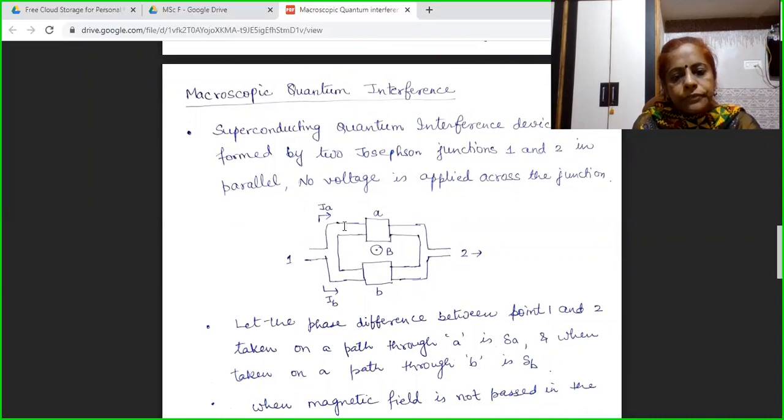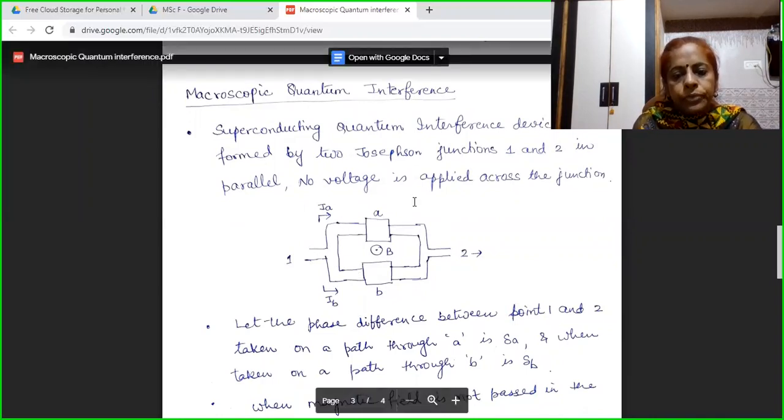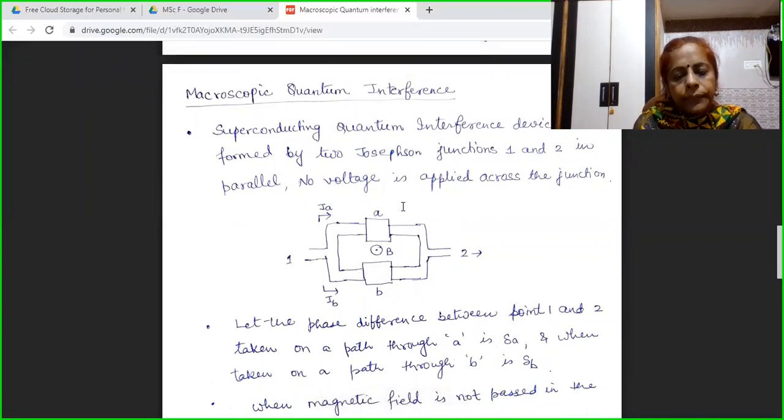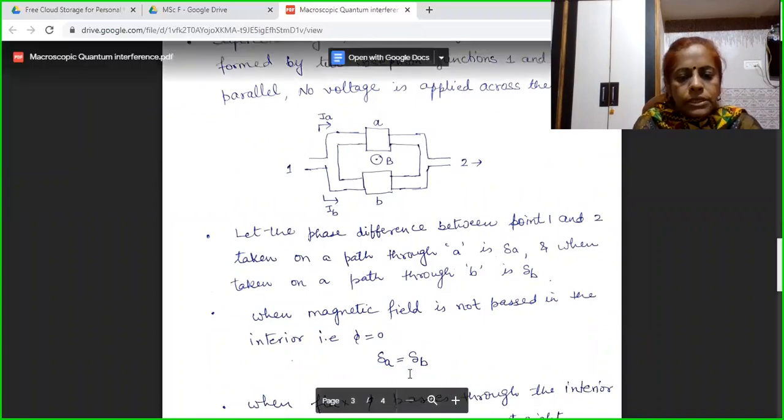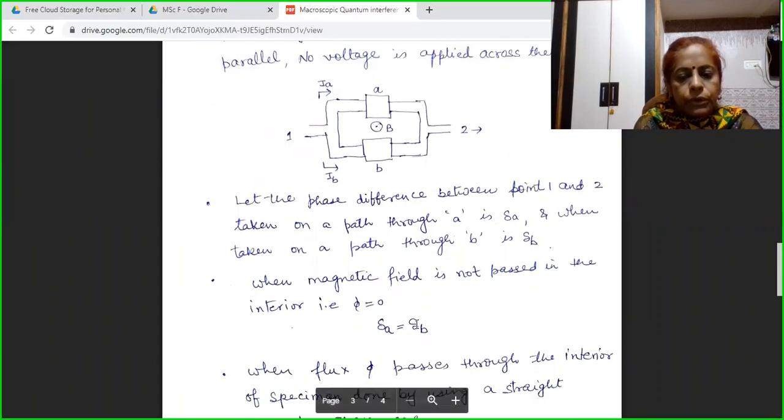Assuming that the phase difference between my point one and two, when I am taking through a path A, it will be delta A, and when taken through path B, let it be delta B. Initially, I am applying zero magnetic field. That means no magnetic field is passed. Hence, magnetic flux will be zero. That means the phase difference across these two junctions will be same. Delta A will be equal to delta B.